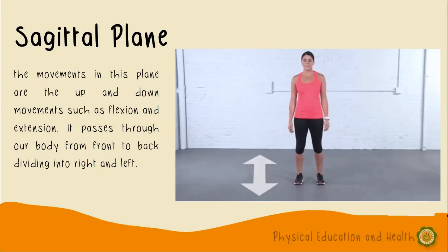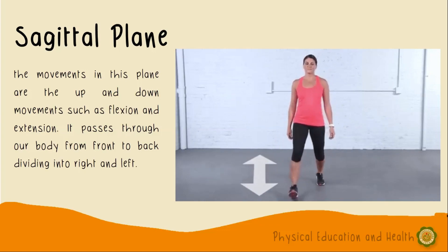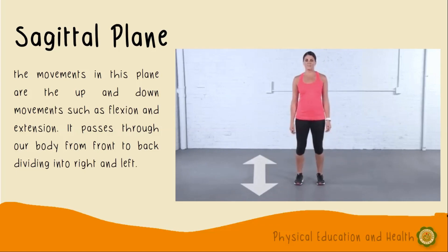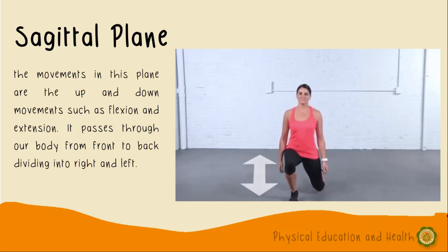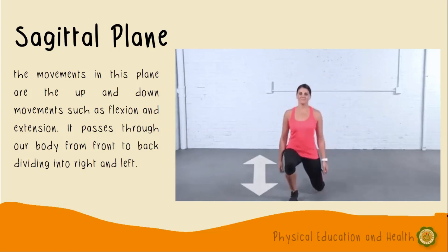Pag-usapan natin si sagittal plane. The movements in this plane are the up and down movements such as flexion and extension. It passes through our body from front to back, dividing it into left and right. So, the sagittal plane is a vertical plane that cuts our body into left and right halves. As you can see in the demonstration, her body is moving front to back, flexing and extending the hip and knee joint.